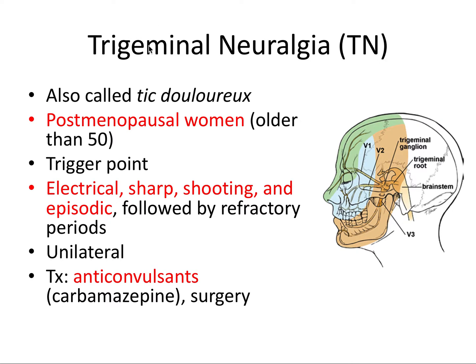Since we're talking about trigeminal neuralgia — there's neuralgia for every cranial nerve — trigeminal neuralgia refers to this nerve pain (algia meaning pain) of the trigeminal nerve, which is cranial nerve number five. It's going to affect any or all of the branches of cranial nerve five: V1, V2, and V3. This is a nerve map showing V1, V2, and V3 and the regions of the face that they are supplying.